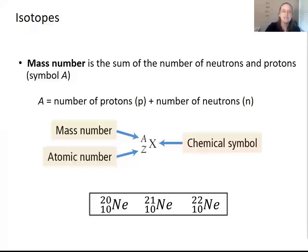So for our neon species, we have neon 20, 21, and 22. All of these have the same number of protons or the same atomic number, but they differ in the number of neutrons, which is the mass number minus the number of protons.